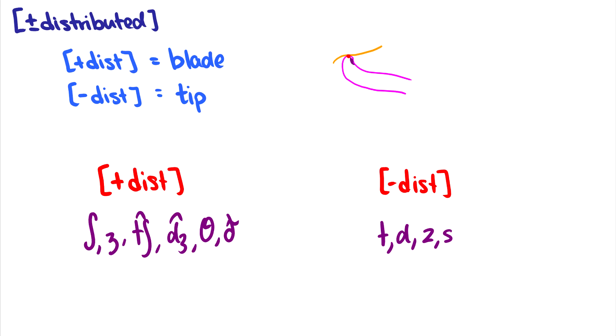Compare that to minus distributive sound, which is the tip, like t and d and z and s, which we can feel much more with it being the tip of the tongue. So plus distributive, meaning the blade, minus distributive, meaning the tip.